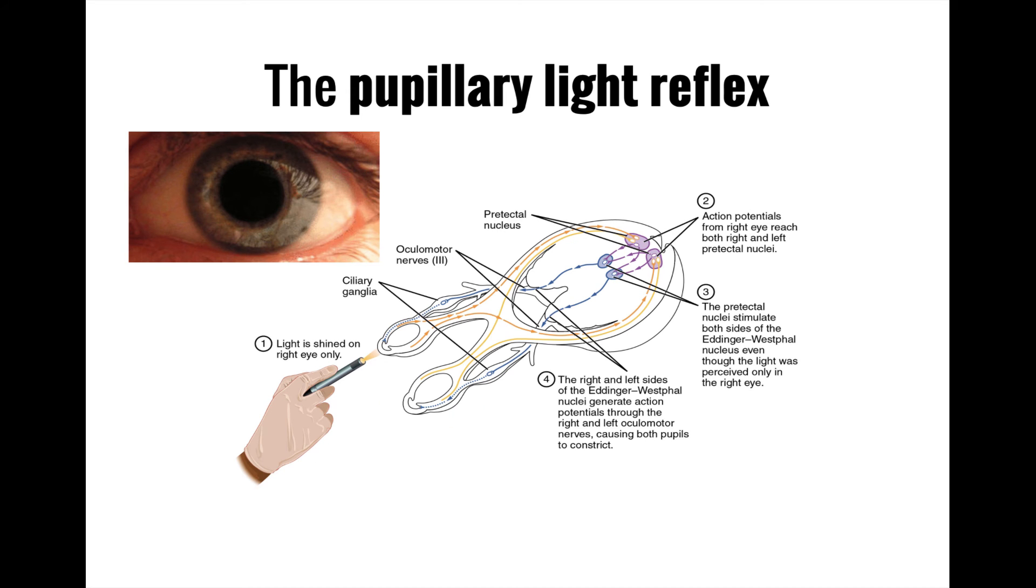Importantly, light entering even one eye will cause both pupils to constrict. An intact pupillary light reflex relies on both the afferent half, the optic nerves, and the efferent half, the oculomotor nerves, of the reflex to be intact.